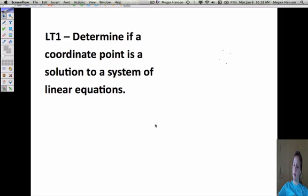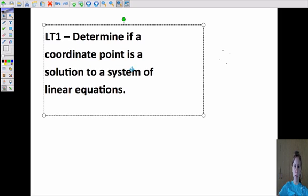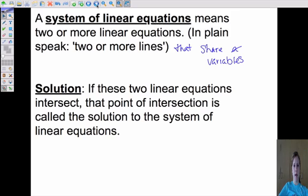So to better understand that, let's get to our definitions here. A system of linear equations means two or more linear equations. And really, we're just going to talk about two. And they share variables. They have the same variables. So if we're talking about two businesses that are comparing the same sales to the same profits kind of a thing. It's just two or more lines, if you want to think about it really plainly.